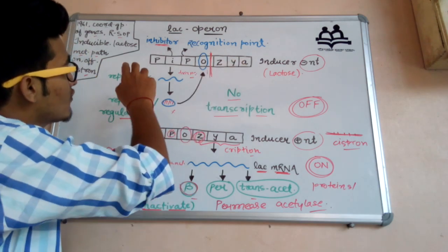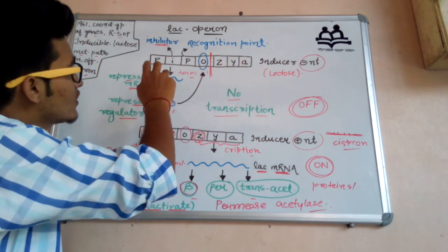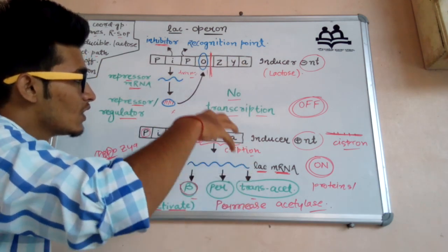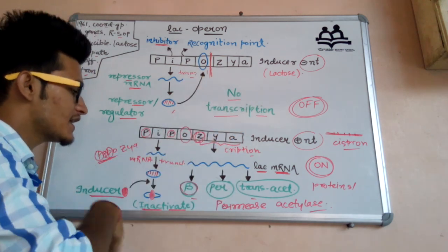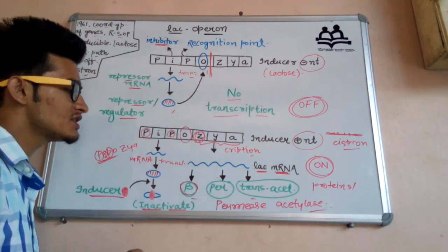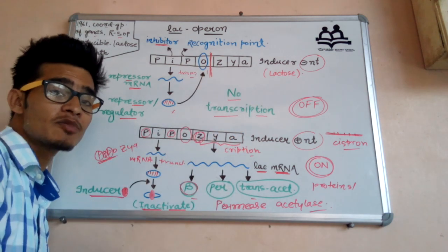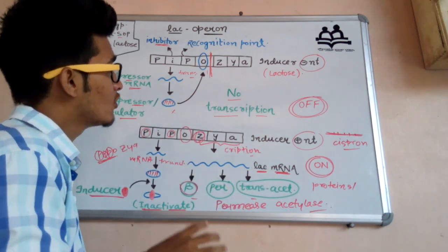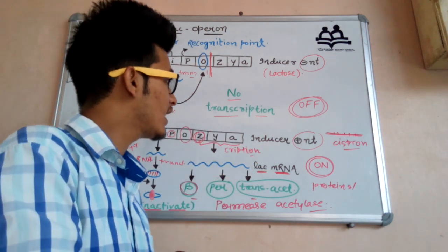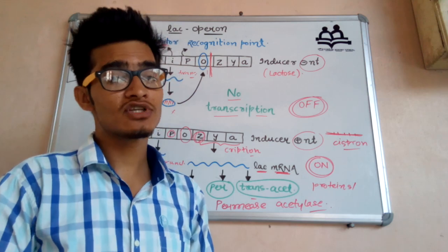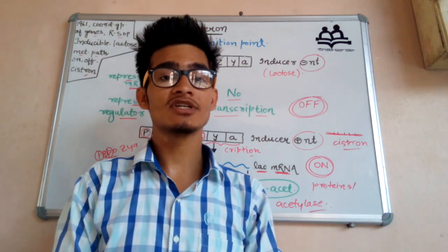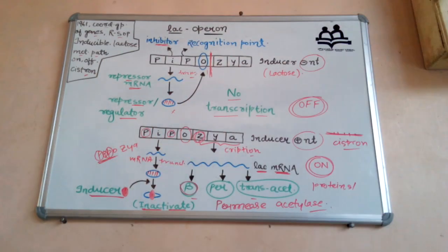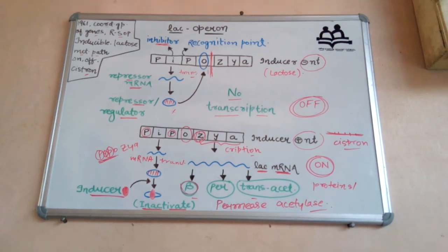So this is all about the Lac operon, where we discussed different kinds of genes — promoter gene, inhibitor gene, operator gene, structural genes — as well as ON and OFF states, where different proteins bind, and the purpose of mRNA. I hope you enjoyed this video. If you did, please subscribe to my channel. Thank you so much for watching.